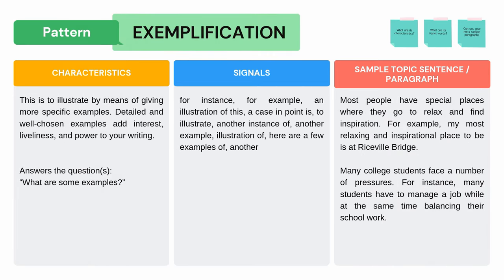Next, Exemplification: This is to illustrate by means of giving more specific examples. Detailed and well-chosen examples add interest, liveliness, and power to your writing. It answers the question: What are some examples? Sample paragraphs: Most people have special places where they go to relax and find inspiration. For example, my most relaxing and inspirational place to be is at Riceville Bridge. Many college students face a number of pressures. For instance, many students have to manage a job while at the same time balancing their schoolwork. Do you see any signal words that tell you these are examples of exemplification?